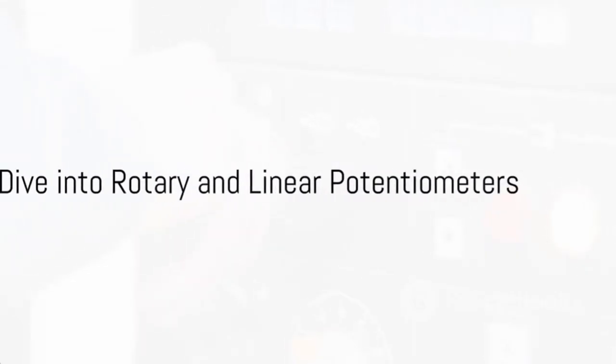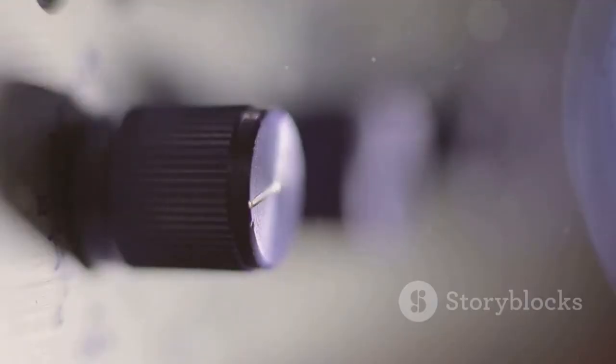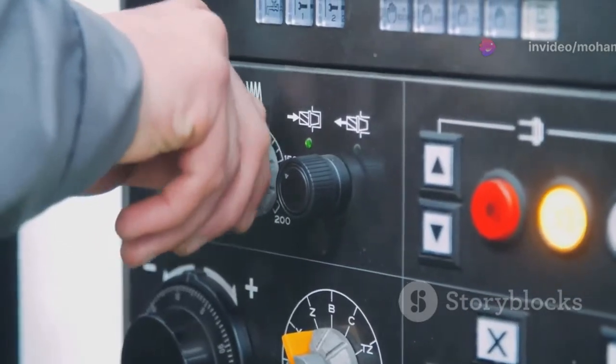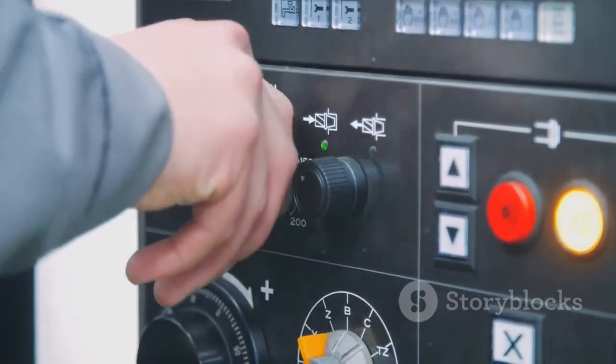Let's take a closer look at two of the most commonly used potentiometers, the rotary and linear potentiometers. The rotary potentiometer, often simply called a rotary pot, operates on a semicircular pattern. This makes it user-friendly as you can easily adjust the resistance by rotating the knob.